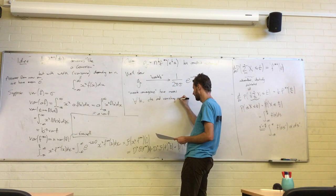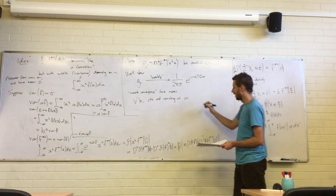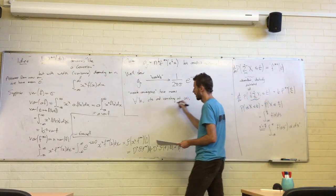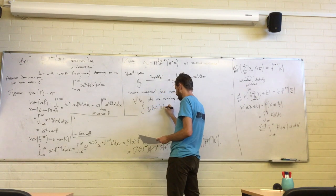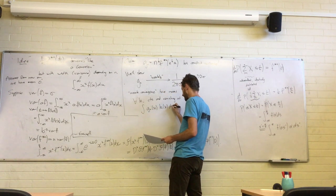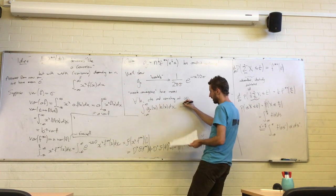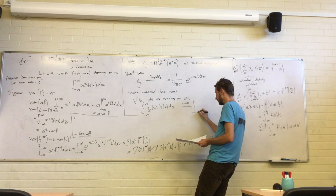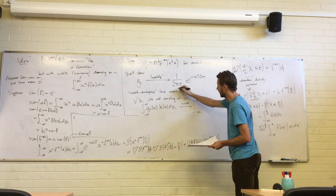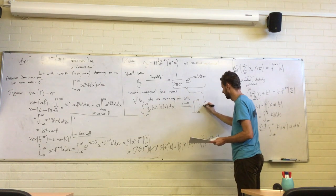We mean: for any k continuous and vanishing at infinity — i.e., it goes to zero in both directions — the integral of gn(x) k(x) dx over the whole real line converges, as n goes to infinity, to the integral of the limit times k.